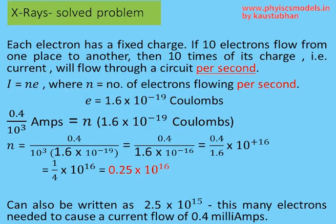And the current in our particular problem is 0.4 divided by 10 to the power 3 amperes. So putting that in the equation, we can find out the number of electrons as I divided by e.